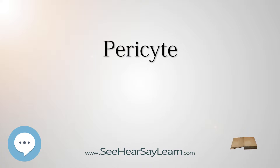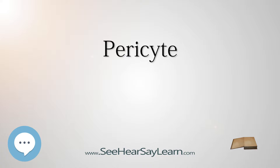Skeletal muscle regeneration and fat formation: Pericytes in the skeletal striated muscle are of two distinct populations, each with its own role. The first pericyte subtype, type 1, can differentiate into fat cells while the other, type 2, into muscle cells.